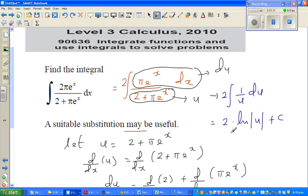Now you have to substitute back what is u, which is 2 plus πe^x. So this is 2 natural log of 2 plus πe^x plus c.